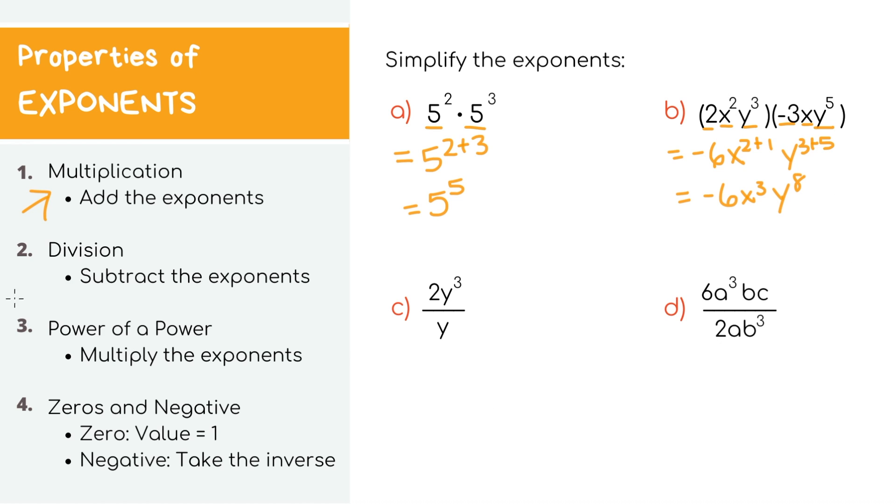For our second property, we have division. When you're dividing numbers with exponents, and remember the base values still have to be the same, then we can subtract the exponents. Looking at our next example, let's copy down the 2. We're not doing anything with that. For the y, the whole point of simplifying is still to make it so that we only have one y value instead of 2.